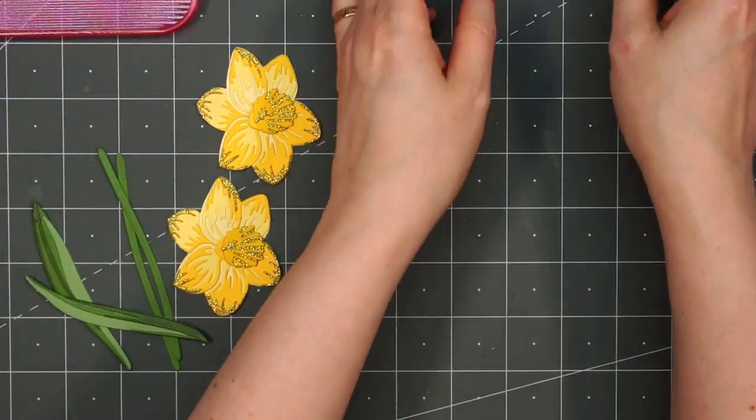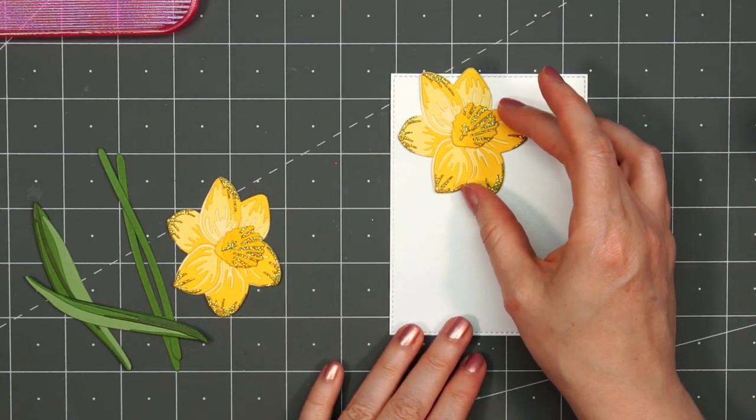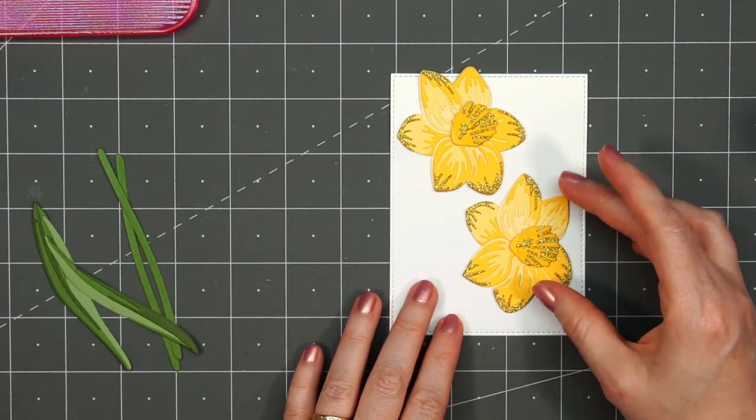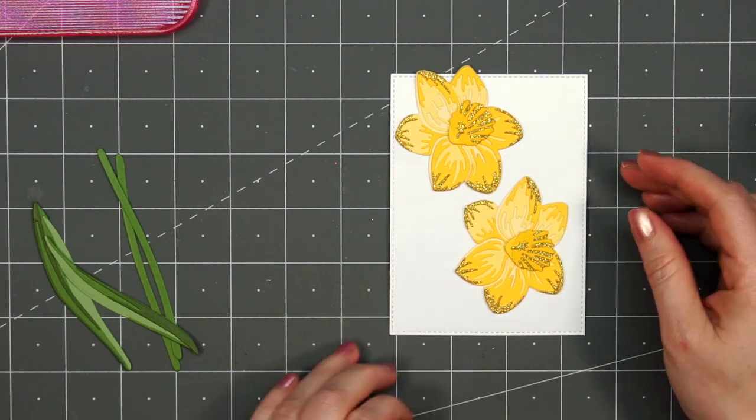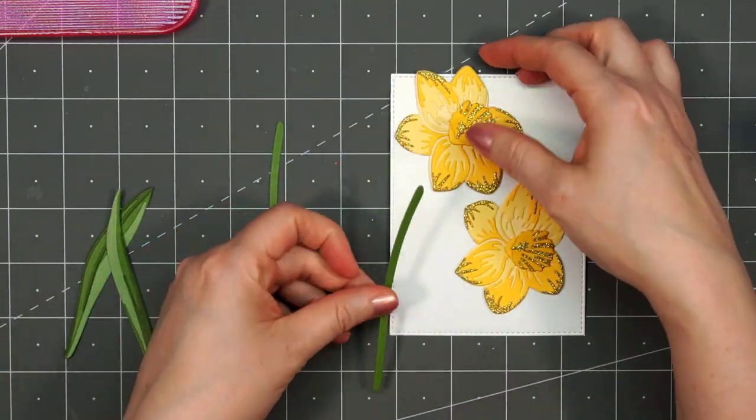I have two of them all ready. I decided only to assemble one since they take a little bit of time to assemble. I'm going to lay these out on that stitched rectangle die cut.